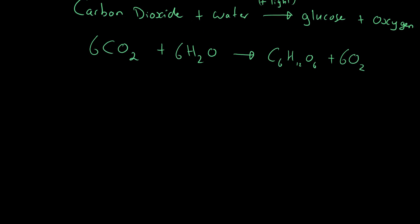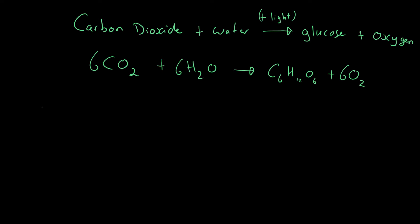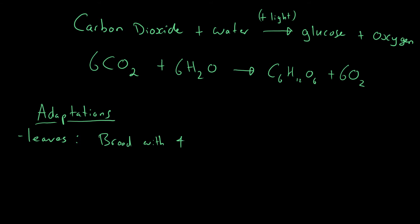Going into a bit more detail — how are plants adapted to carry out that process? So, adaptations. The process mainly occurs in the leaves of the plants; it does occur in other parts as well, but the leaves are the main organ. How are the leaves adapted? Well, most of them are broad, with a high surface area. Having a high surface area means you obtain as much sunlight as you can. If the leaves were all closed up, they wouldn't be exposed to a lot of sunlight.